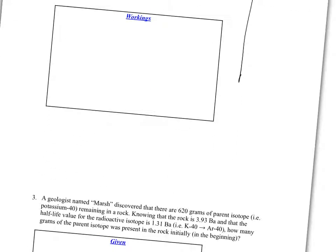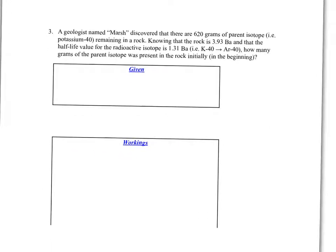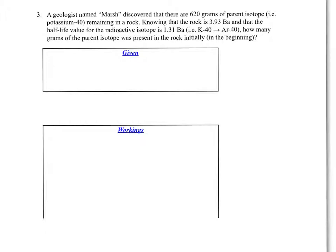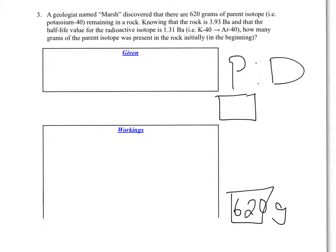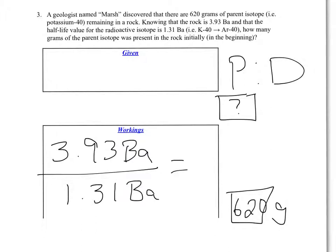So now we'll move on to the next problem. This particular problem says a geologist discovered that there are 620 grams of parent remaining in the rock. So right away, I'm going to set up my parent-to-daughter ratio. In the beginning, this much parent, remaining. So it just said 620 grams are actually remaining in a rock right now. And they're saying how many grams of the parent isotope was there in the beginning. So we know that the age of the rock is 3.93 billion.